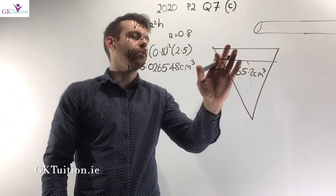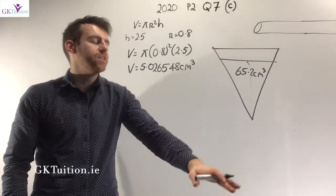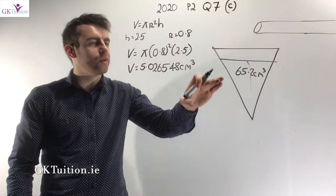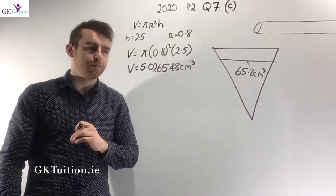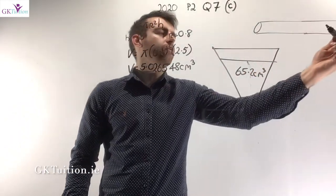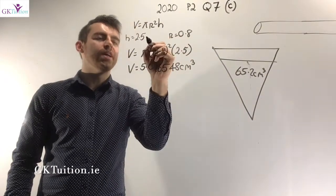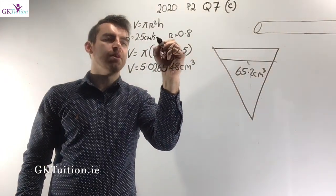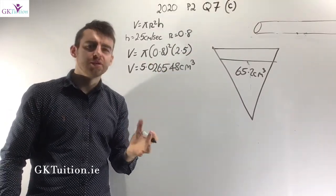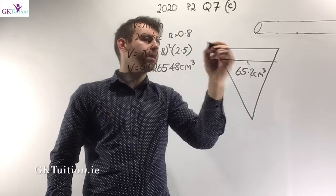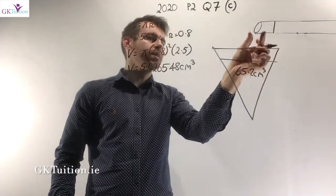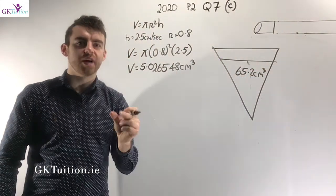We're talking about filling the cone up to point F. From part b, the volume at point F is 65.2 cm cubed. Water flows from a cylindrical pipe at a rate of 2.5 cm per second, and the radius of the cylinder is 0.8 cm. Think of the cylinder like this: 2.5 cm of its length flows out every second — that's the amount of water leaving the cylinder each second.